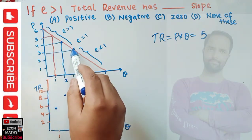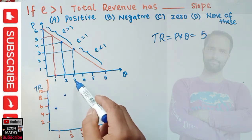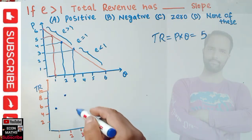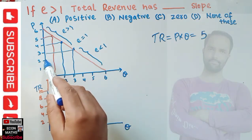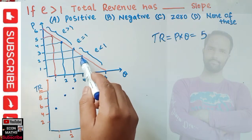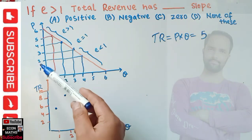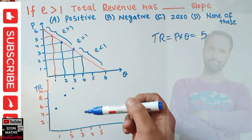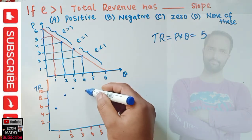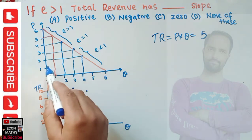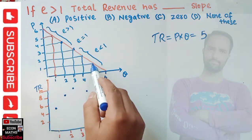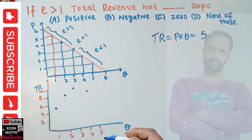When price falls to three, quantity demanded increases to three, so total revenue is three times three equals nine. When price falls to two, quantity demanded increases to four, so total revenue is two times four equals eight. Finally, when price falls to one, quantity demanded increases to five, so total revenue is one times five equals five.